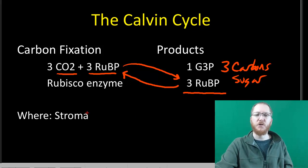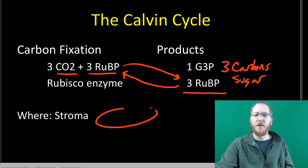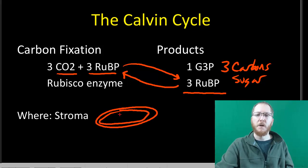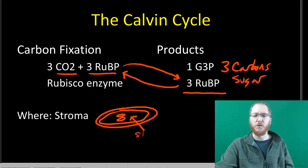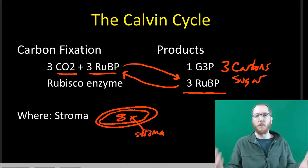This process takes place in the stroma of the chloroplast. If you remember, there are those outer membranes and then those thylakoids. All the rest of that space — essentially the cytoplasm of the chloroplast — and the very inner part, that's the stroma. So that's where the Calvin cycle is taking place.